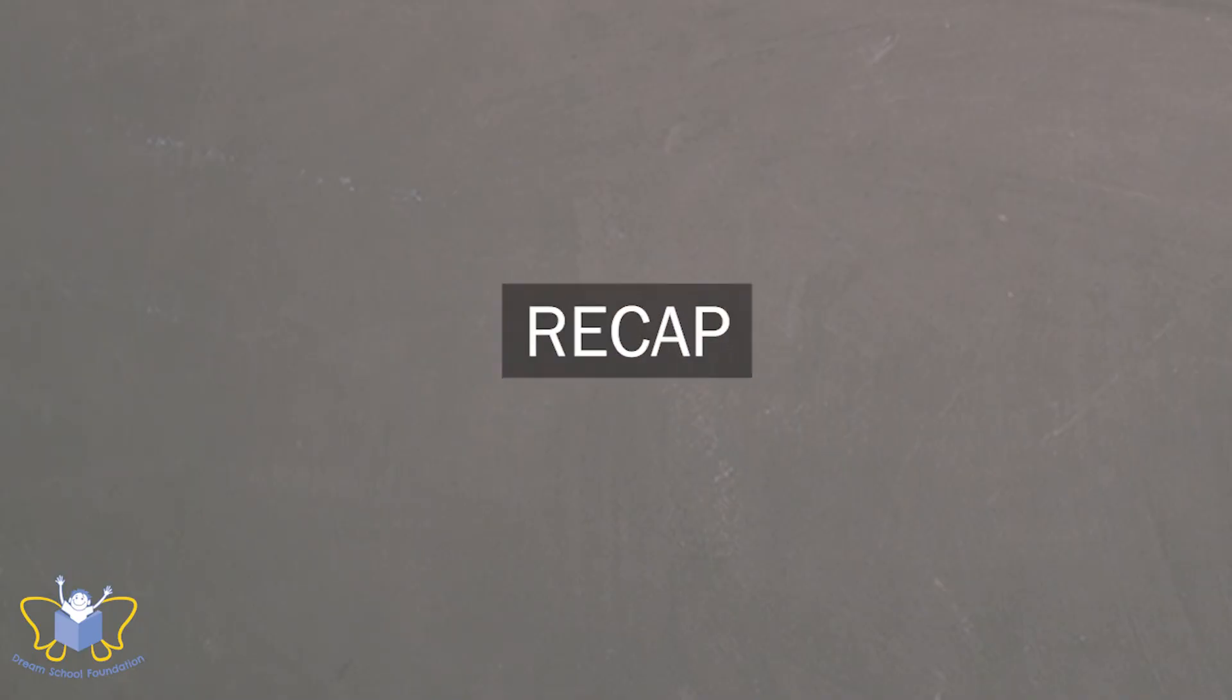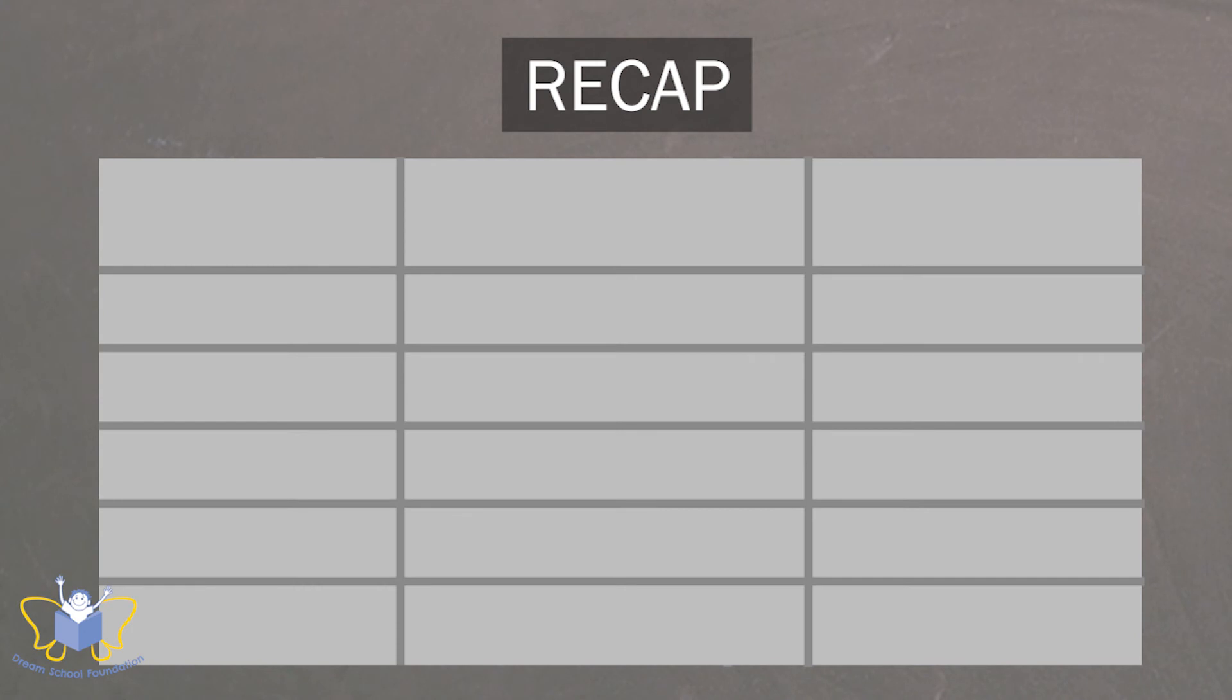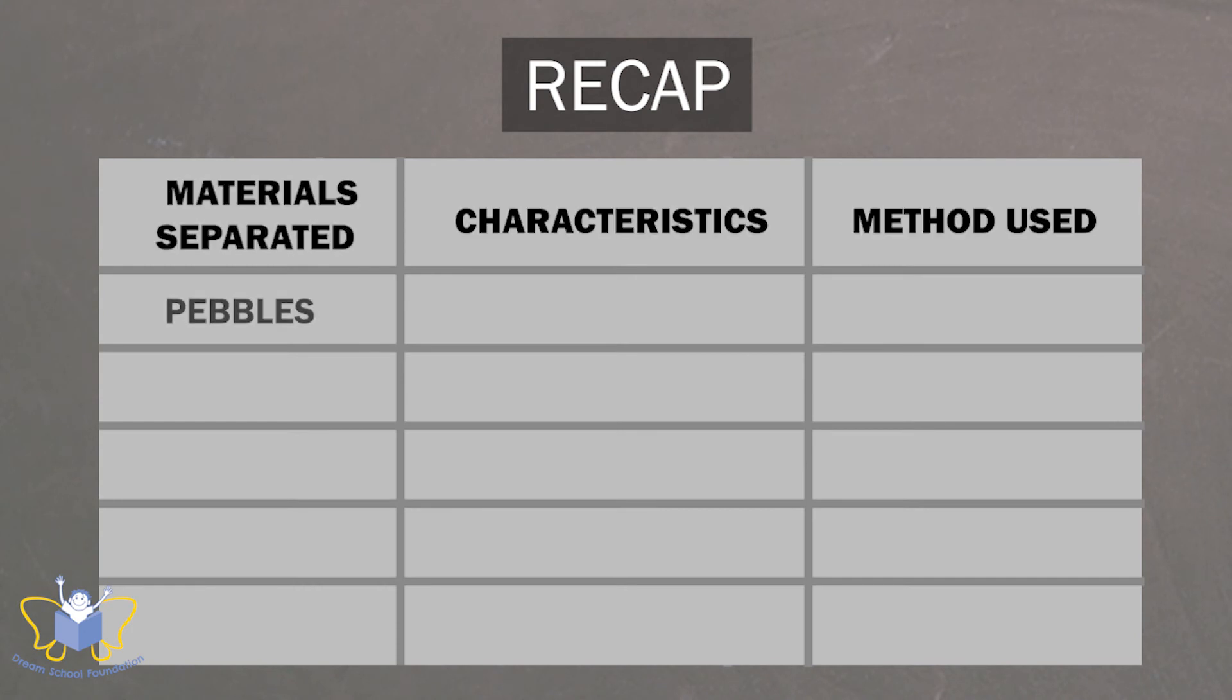Let us recap what we have learned till now. We have learned how to make mixtures and we have learned how to identify the characteristics to separate different components from one another. Let us go through it quickly. When it came to pebbles, we looked at its color and size. Due to its appearance and large size, they were easy to pick up. Hence, we used handpicking.